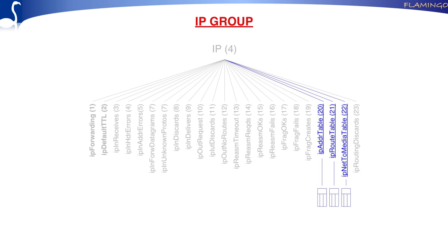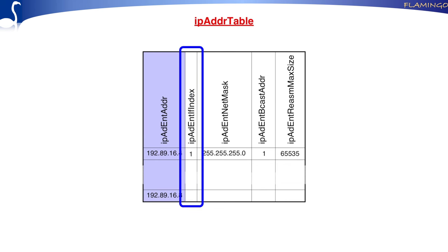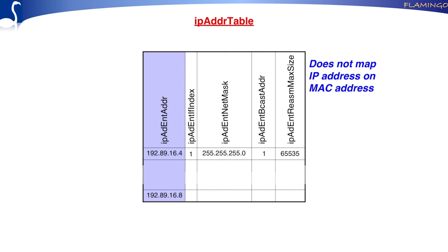The IP address table maps the IP address to an interface index — the same index we saw in the interface table. It does not directly map the IP address to the MAC address; you need an additional step from the interface index to the MAC address. It also shows the net mask used for classless inter-domain routing.